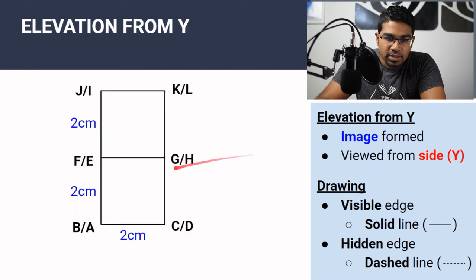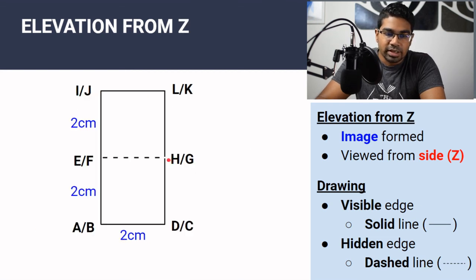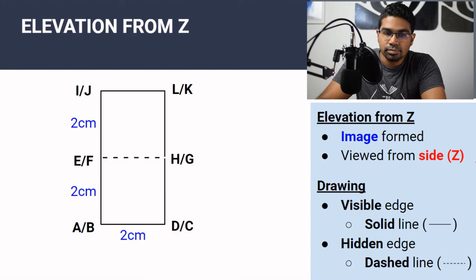Compared to Y, this is a solid line because we can actually see this edge. So an edge that is not visible — we need to use a dashed line. That's it for plan and elevations. If you've learned something, please don't forget to hit the like button — it really does help to support my channel. And if you haven't subscribed yet, please do subscribe. I'll see you in the next video.